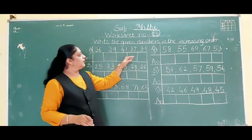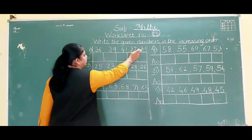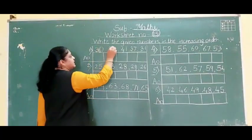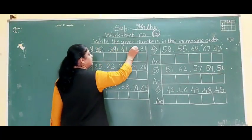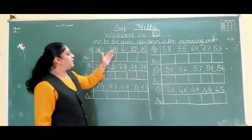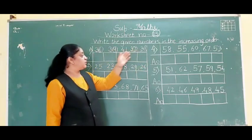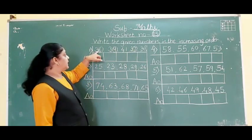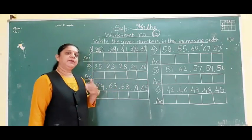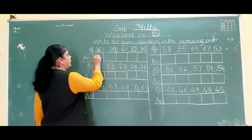Since the first digit is 3 everywhere (3, 3, 3, 3), we look at the second digit: 6, 9, 7 and 1. Which number will come first? 1. So 31 will come first.